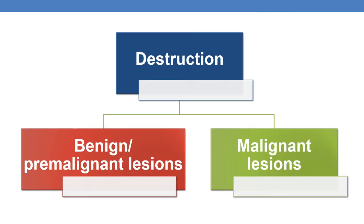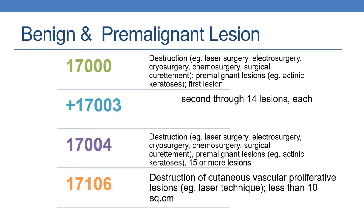In the current session we will be discussing the various CPTs of destruction of benign or premalignant lesions and the destruction of malignant lesions. The first CPT is 17000, which indicates destruction by laser therapy, laser surgery, electrosurgery, cryosurgery, chemosurgery, and surgical curettement for premalignant lesions, for example actinic keratosis, first lesion.